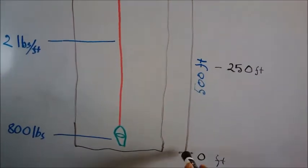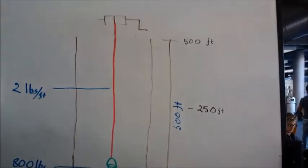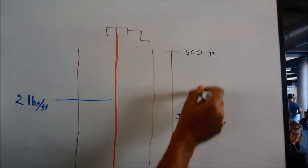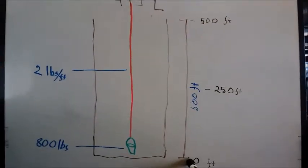We have to determine how much work is needed to pull the bucket from 0 to 250 feet in part A, from 250 to 500 feet in part B, and from 0 to 500 feet in part C.